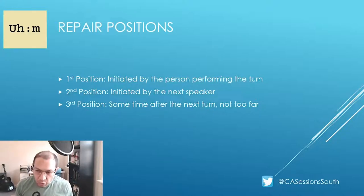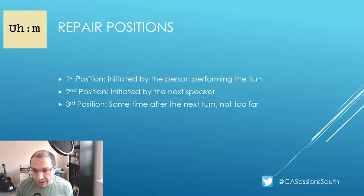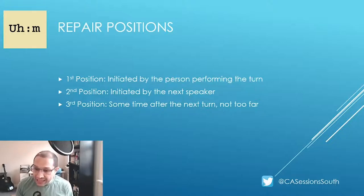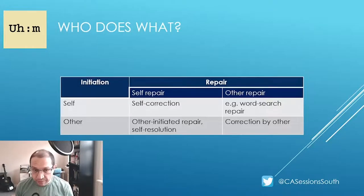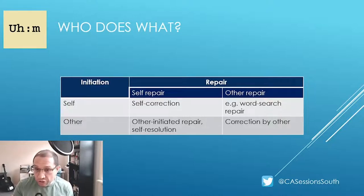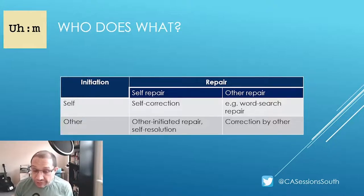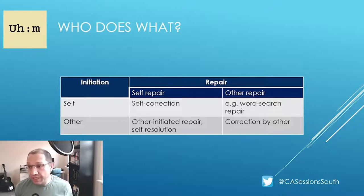In terms of frequency, self-repair is by far the most frequent form of repair. Other-initiated repairs are regularly performed as if they were dispreferred actions, with some kind of delay from the trouble source and a form of downgraded or mitigated repair solution. There is a socially organised preference for the person who produces the trouble source to be the one who initiates repair and resolves it — this is the preference for self-correction. There is evidently an order of preference in types of repair sequences, based on the division of labour in these repair sequences.